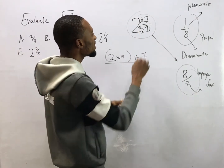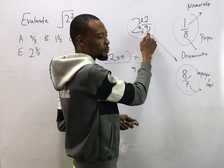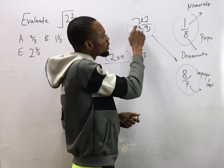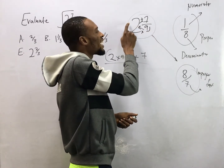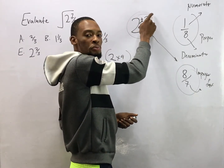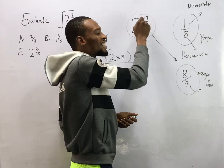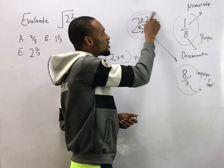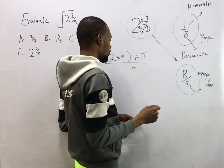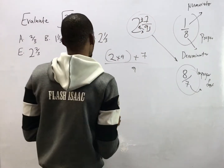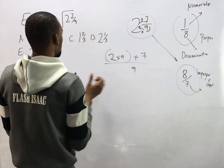Let me repeat. The number at the bottom, you use it to multiply the whole number, then add what is at the top. Any answer you get, you divide it by — place it over — the number at the bottom.